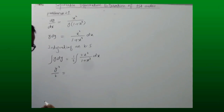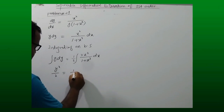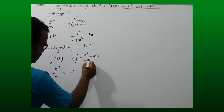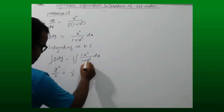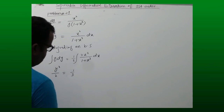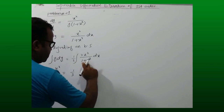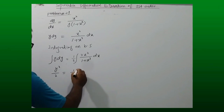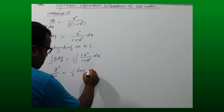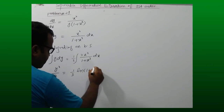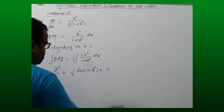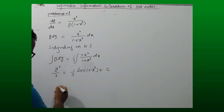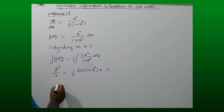Multiplying numerator and denominator by 3 gives 1 over 3 on the left. For the right-hand side, the derivative of 1 plus x cubed exists in the numerator while 1 plus x cubed is in the denominator, so the integration gives the natural log of 1 plus x cubed, plus a constant of integration.